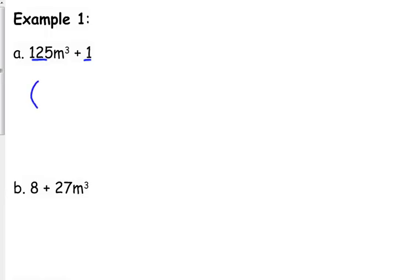What we do is we set up two sets of parentheses. We set up a binomial and we set up a trinomial. You may want to put some blanks there to help you out, know what you're expecting. You can probably drop that after the first couple of examples. So what we do is we take the cube root of the first term. The cube root of 125m cubed is 5m. That goes in the first spot in the binomial. We take the cube root of the other term. In this case, that is 1. That goes in the second spot of the binomial.